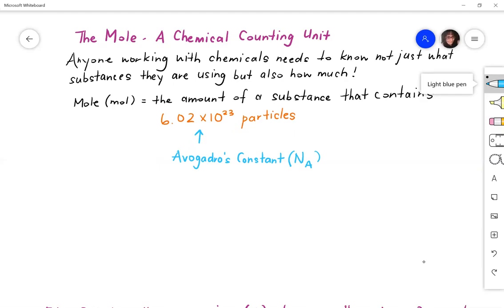The 6.02 times 10 to the 23 particles can be either number of atoms, formula units,